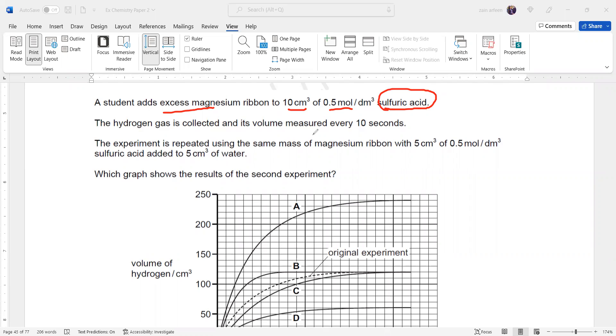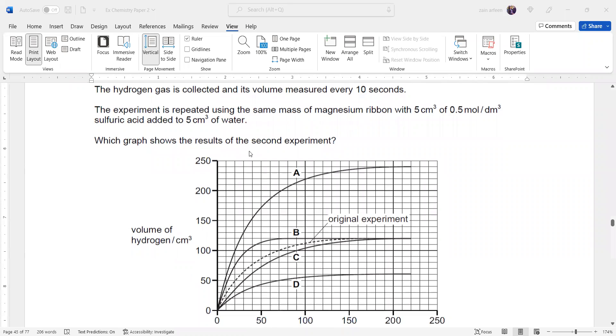The hydrogen gas was collected every 10 seconds. The original volume of the hydrogen gas collected is represented by the dotted line. The experiment was repeated using the same mass of magnesium ribbon.